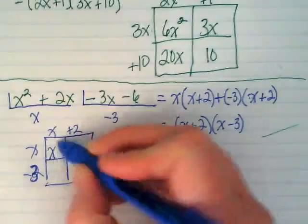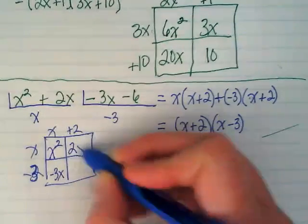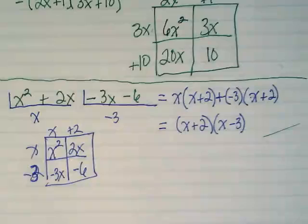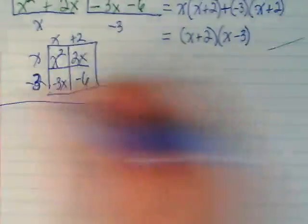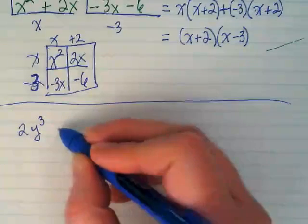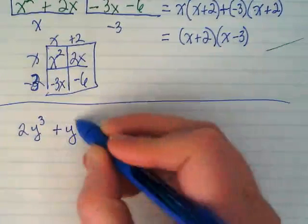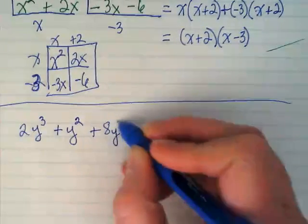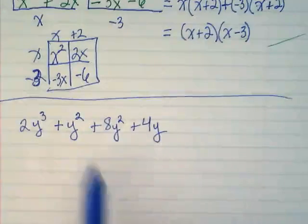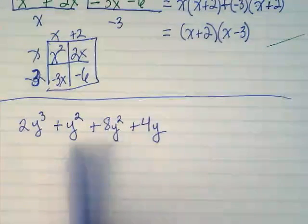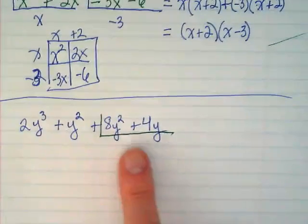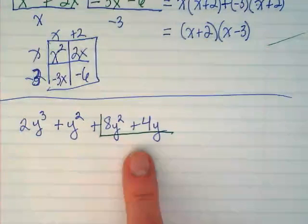X squared minus 3x, 2x, negative 6. Ready for one more before I give you practice? Yeah. Okay. Let's use a y. 2y to the third plus y squared plus 8y squared plus 4y. I broke apart the middle term. Y squared and 8y squared would really be 9y squared. But I pulled it apart for grouping on purpose. I wanted this side to have a 4y that I could divide out. Do you see where the 4 is coming from from both of them? Yes.